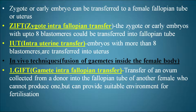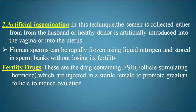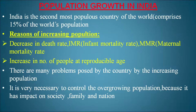In vivo techniques involve fusion of gametes inside the female body. GIFT (Gamete Intra-Fallopian Transfer) involves transfer of an ovum collected from a donor into the fallopian tube of another female who cannot produce one but can provide a suitable environment for fertilization. Artificial insemination involves collecting semen from the husband or a healthy donor and artificially introducing it into the vagina or uterus. Human sperms can be rapidly frozen using liquid nitrogen and stored in sperm banks. Fertility drugs contain FSH to promote Graafian follicle development and induce ovulation.